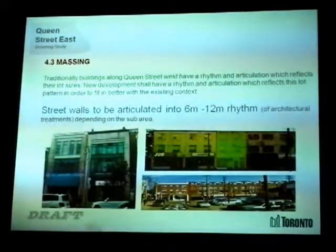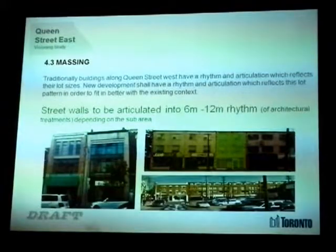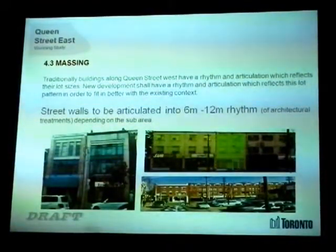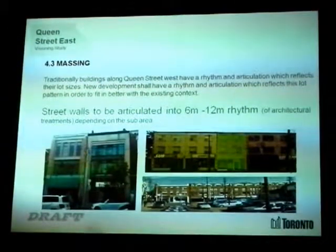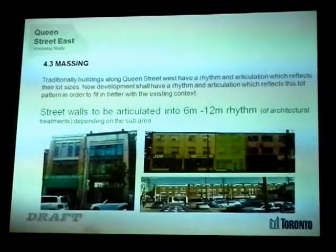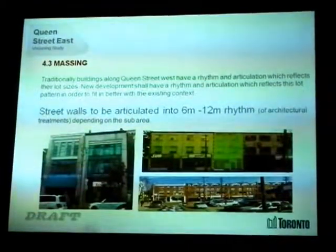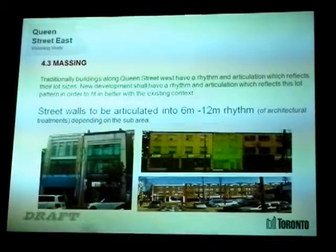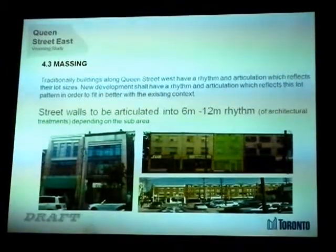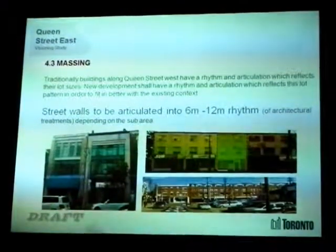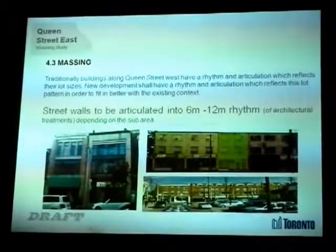We had a lot of discussion about breaking up the street wall architecturally — not about storefronts — into rhythms of 6 to 12 meters depending upon where you are. What this implies is that even if you have buildings on a scale that work well, if they are continuous and unarticulated, they don't necessarily reflect the character of the Beach. The image on the right achieves that rhythm and articulation, and that's something we have to put in the guidelines.